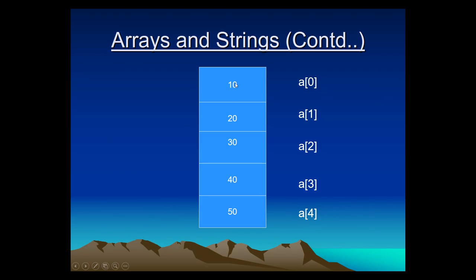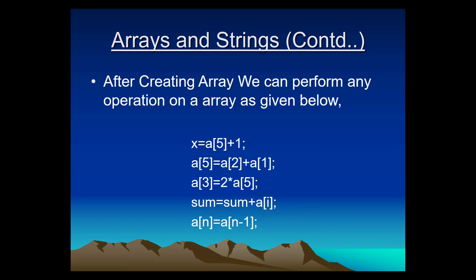As you can see on the screen, location A[0] contains value 10, A[1] contains 20, A[2] contains 30, A[3] contains 40, and A[4] contains 50. There is no need to store values in sequence — you can put any value at any location. After storing values into the one dimensional array, we can perform any type of manipulation: we can add, subtract, or multiply values, or perform any type of mathematical operation on a single dimensional array.